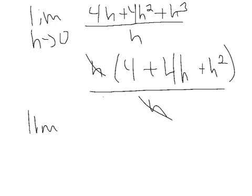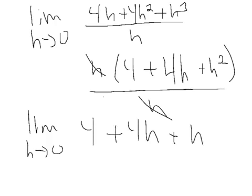So now, final answer, drum roll please, I have 4 plus 4h plus h squared. If I substitute in 0 right now, that's gone, that's gone, I'm left with 4, so the instantaneous velocity is 4, 4 feet per second.